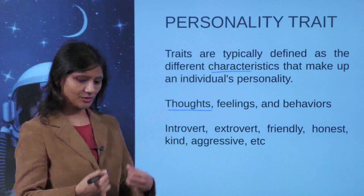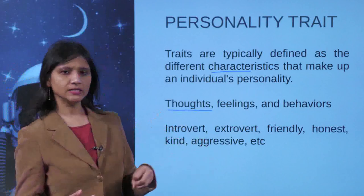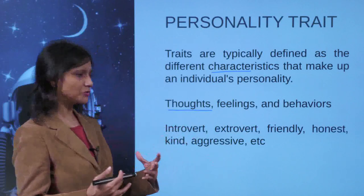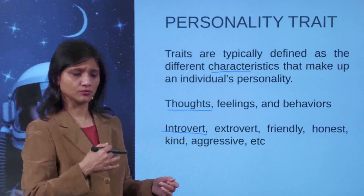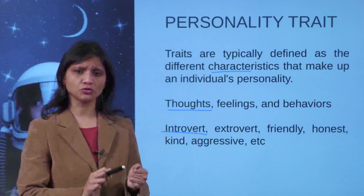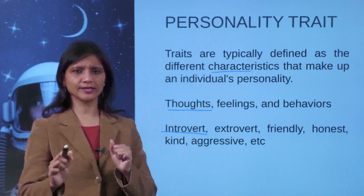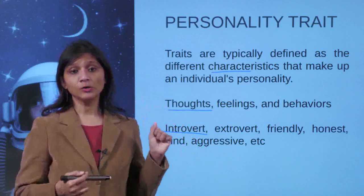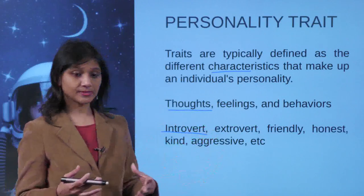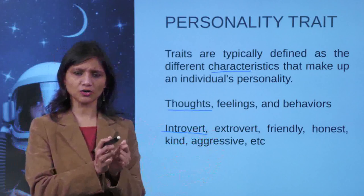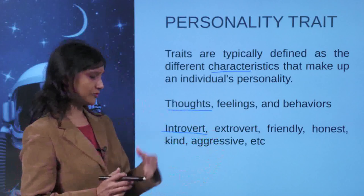People are described as introvert, extrovert, friendly, honest, kind, or aggressive. You must have heard these words. 'You do not talk much — you are an introvert.' 'Look at him, he talks so much — he is an extrovert.' An introvert is someone who doesn't talk much; an extrovert is someone who talks a lot. Being friendly — making friends very easily — that's a trait.